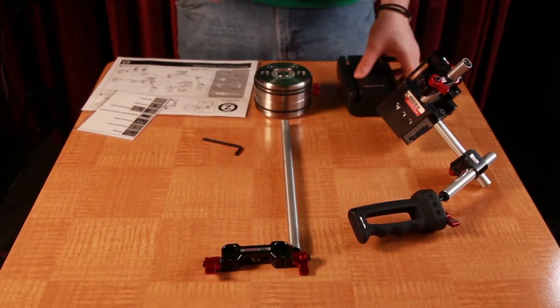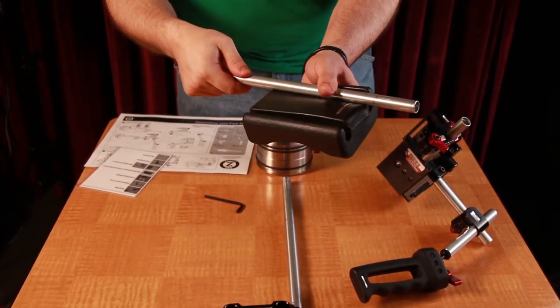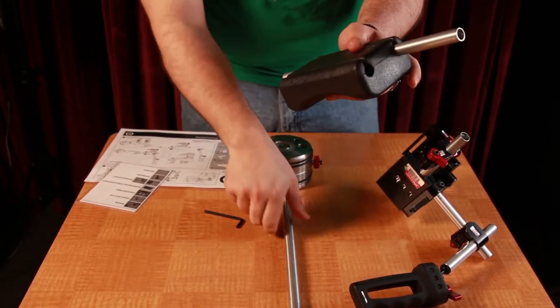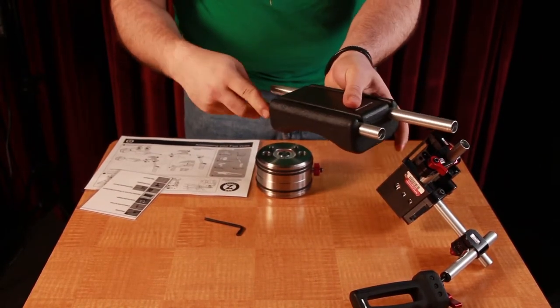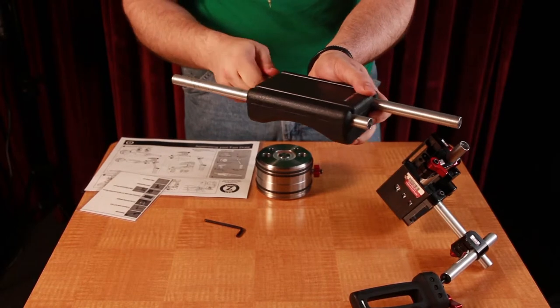Next, take the 12 inch rod and press it firmly into the shoulder pad. Then take the other rod and press it in. Make sure to orient the rods like so.